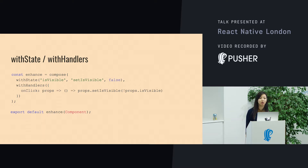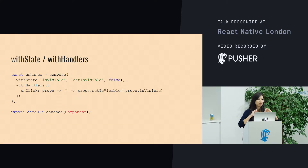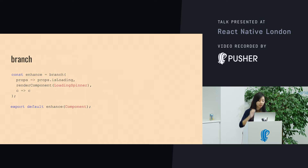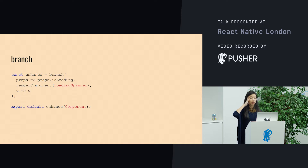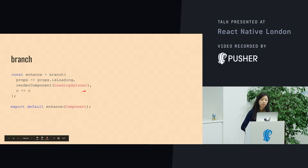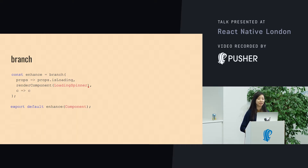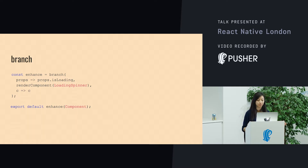Handlers are like what happens when you click a button, but it means you can take all of this out of your component and separate the concerns. Branch is another good one — the first argument it takes is an expression that evaluates to either true or false. If it's true, it will show a loading spinner; if it's false, it will show the original component. This is a really useful one for conditional loading of components.